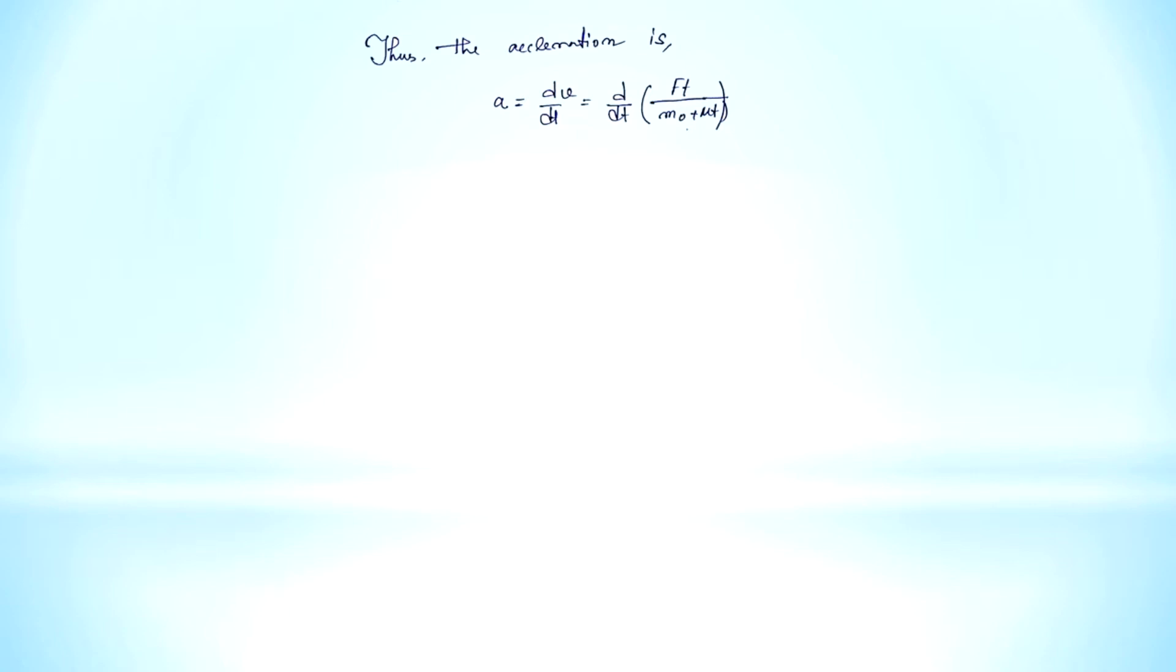This equals d/dt of F/(m₀ + μt). Here we are simply putting the value of v as v = F/(m₀ + μt). We can differentiate this term with respect to t.